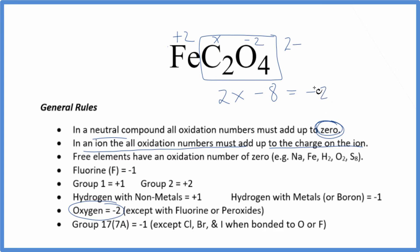So we have this, then we just solve for x. We add 8 to both sides, 2x equals positive 6, solve for x. X is going to equal a positive 3. So the oxidation number on each carbon here is going to be positive 3.